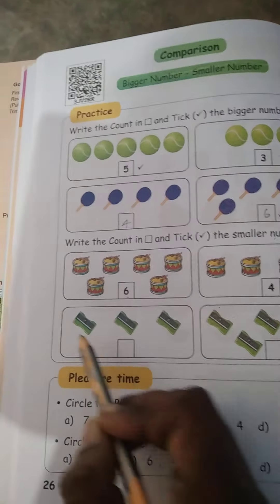Chinna number circle. 1 and 5, compare. Which is small? 1 is small. Compare 6 and 4. Which is small? 4 is small. Compare 8 and 3. Which is small? 3 is small. Compare 7 and 9. Which is small? 7 is small. Complete this page.